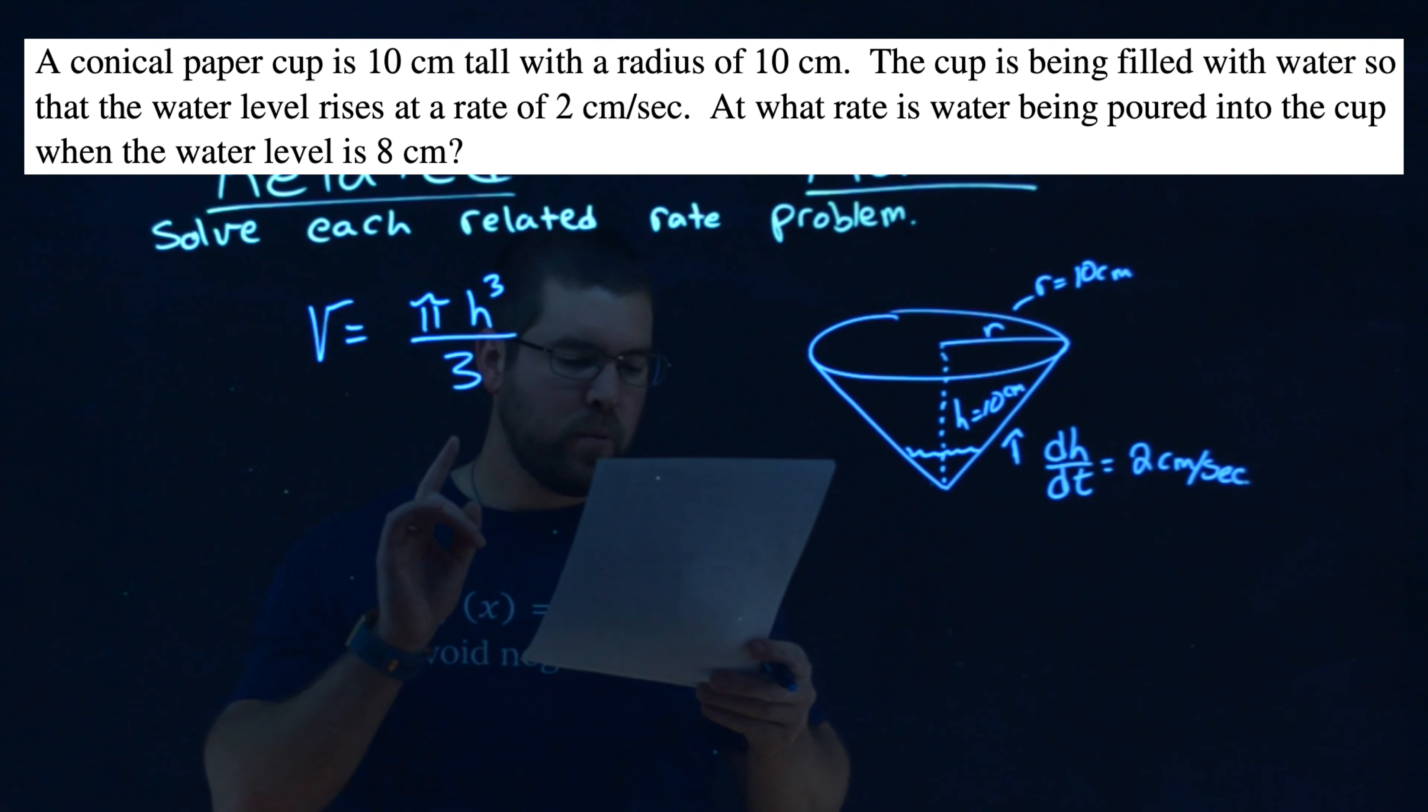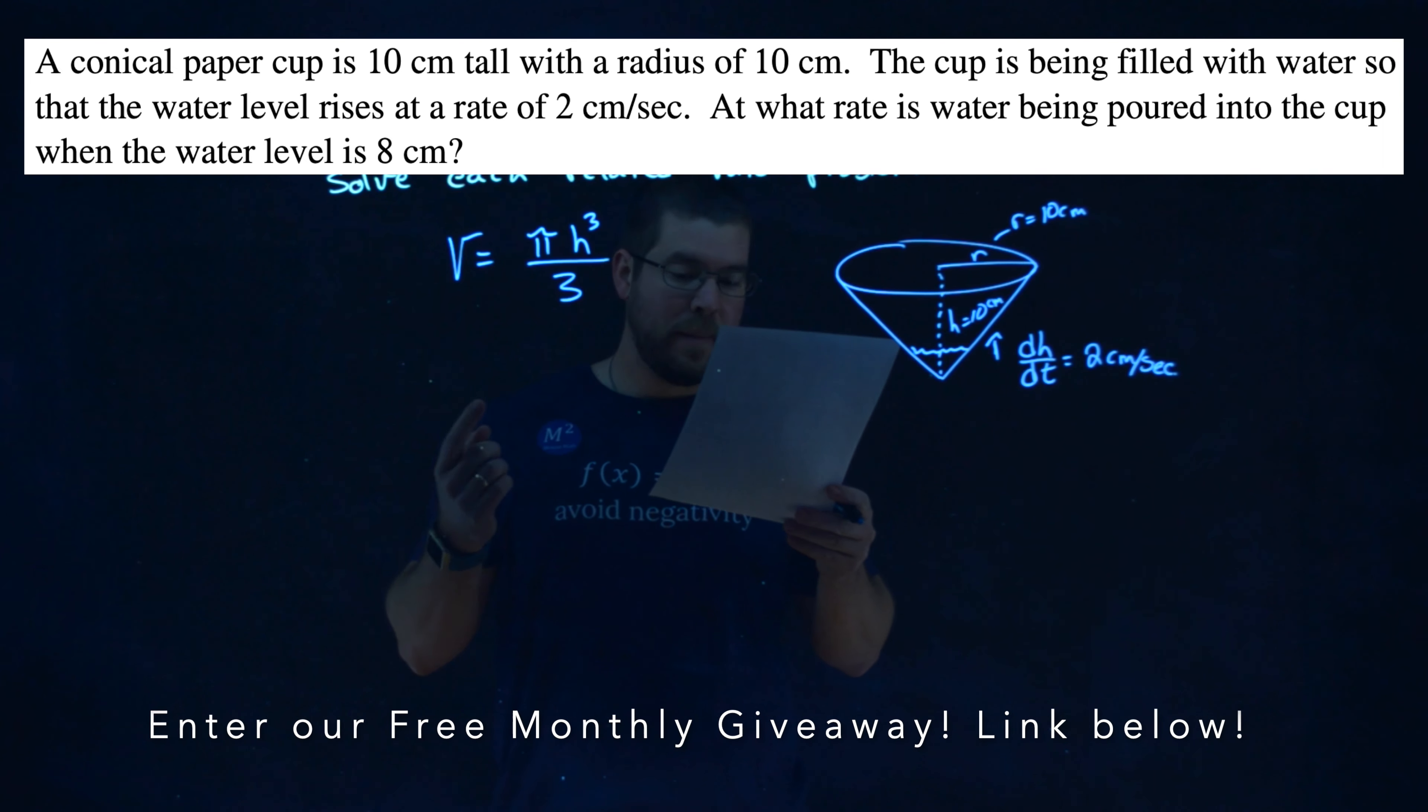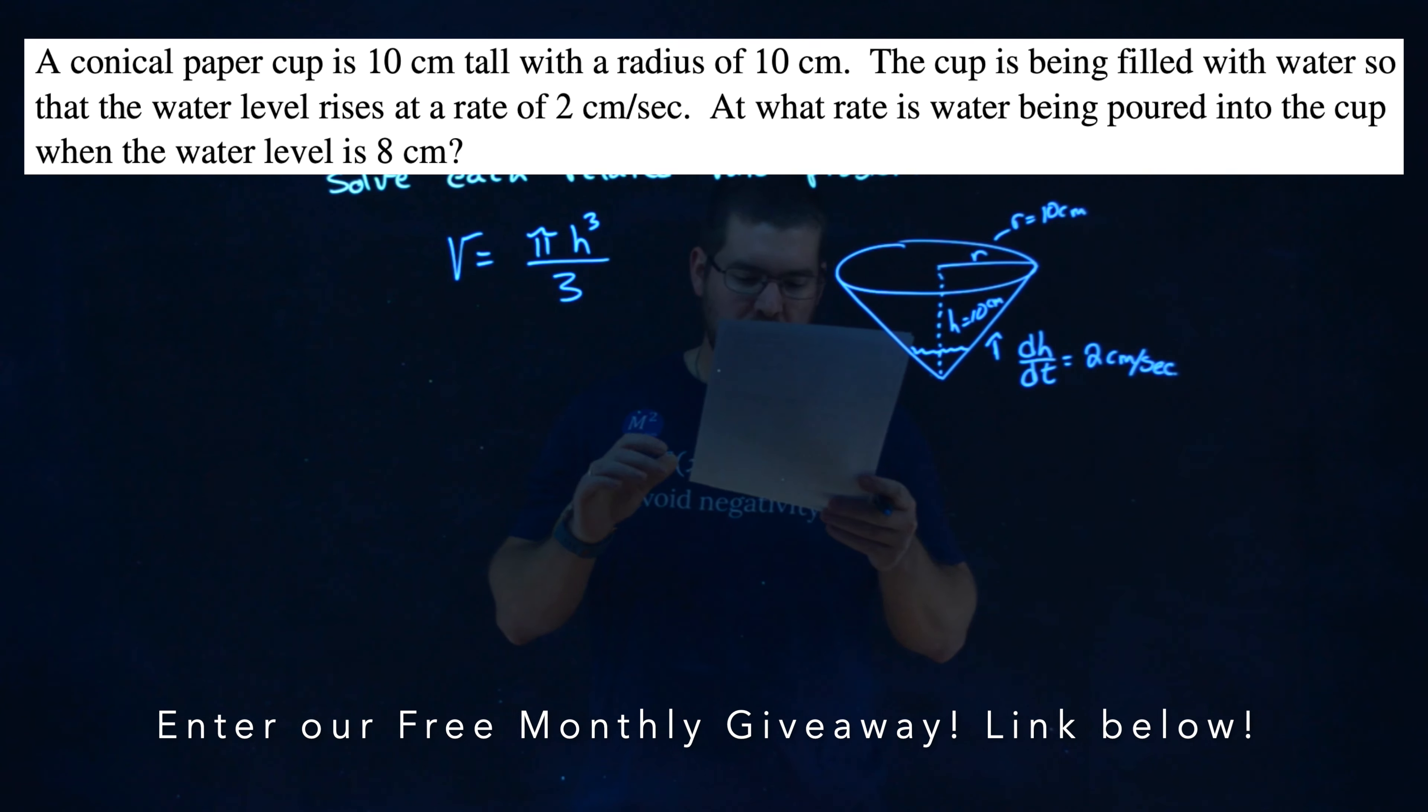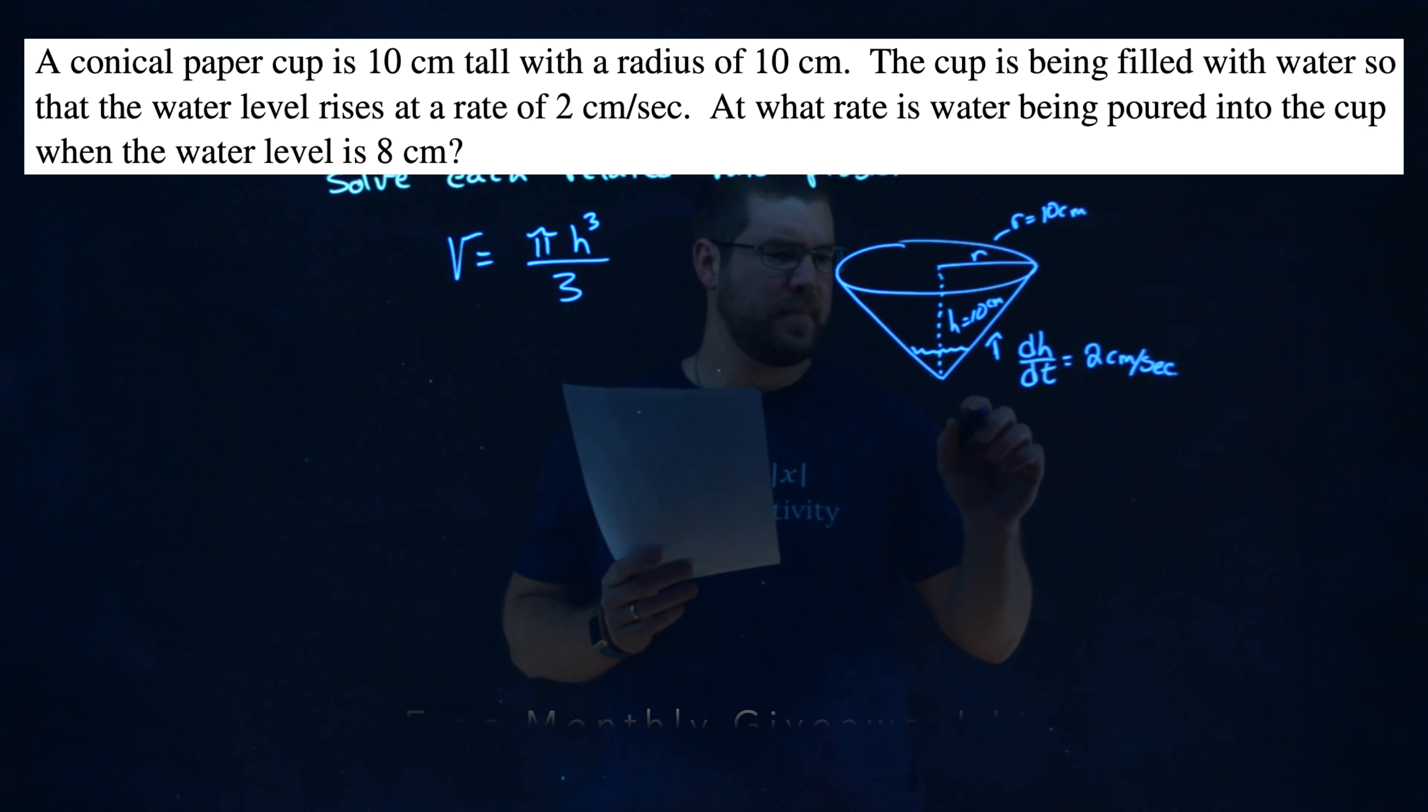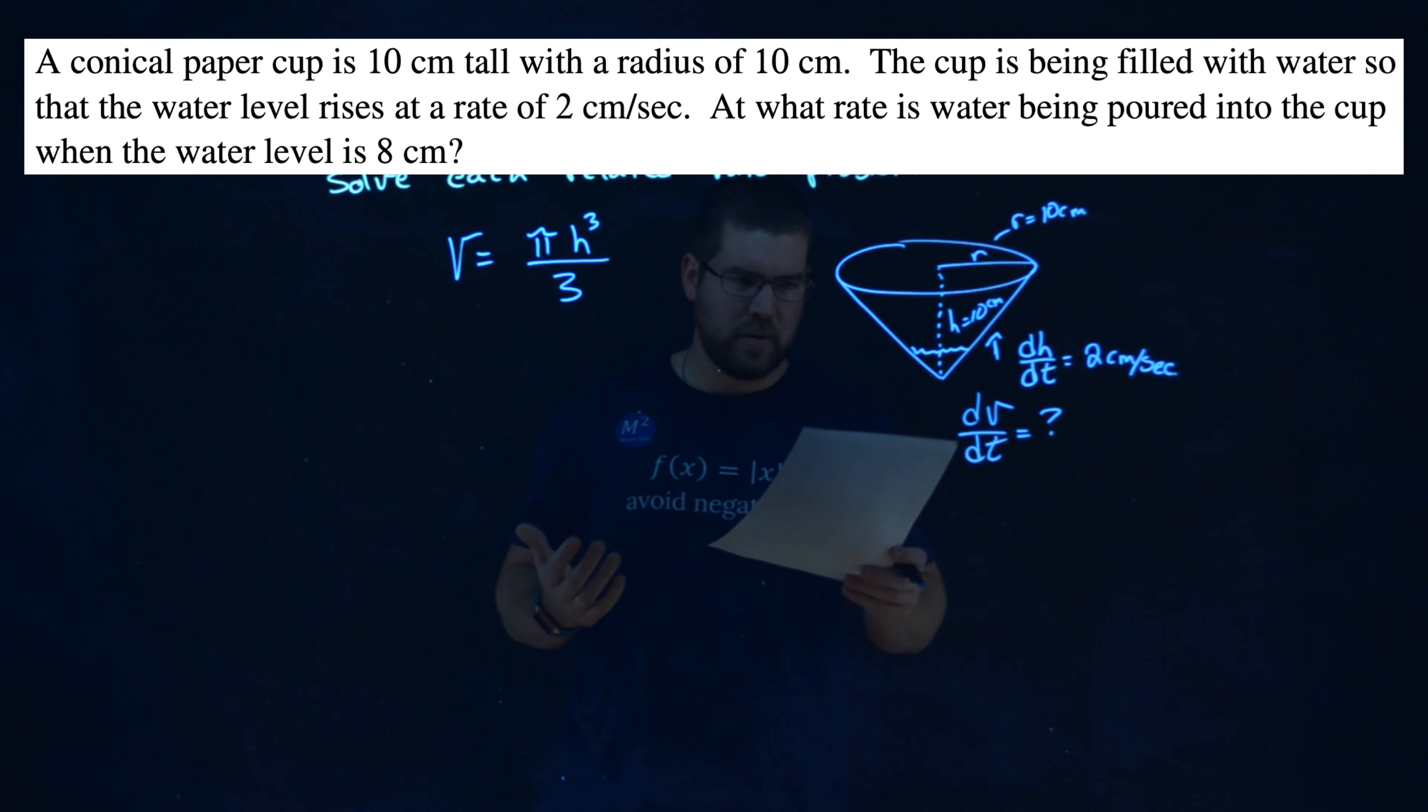So what do we need to find? Well, they want to tell us what is the rate at which the water is being poured into the cup when the water level is 8 centimeters. So we're trying to find our dv dt here. The rate at which the volume is changing.